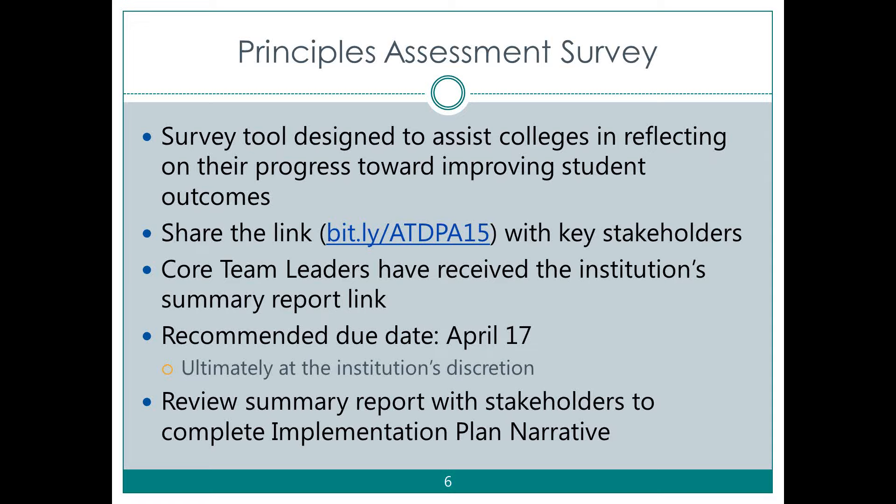Moving now to the implementation plan narrative, which is the second component. This should be a group project — we don't intend for any one person to complete this plan. It's really an opportunity to gather your core team, your data team, your coaches, and others to reflect on the progress your college has made and flesh out the two or three student success priorities you're best situated to pursue over the next couple of years. As part of the implementation plan, we ask that you fill out who was part of the writing and the thinking behind what's in it.